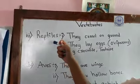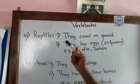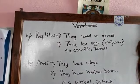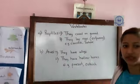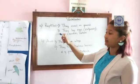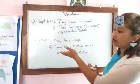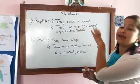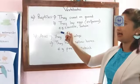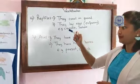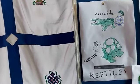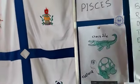The third class is Reptiles. The first characteristic is they crawl on the ground. The second characteristic is they lay eggs — similar to Amphibians, they are also oviparous. Examples are crocodile and tortoise, as you can see in the picture, and these come under class Reptiles.